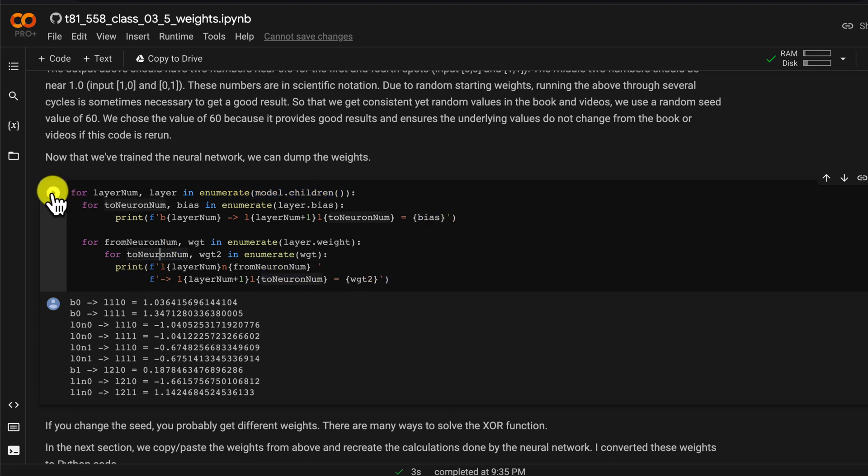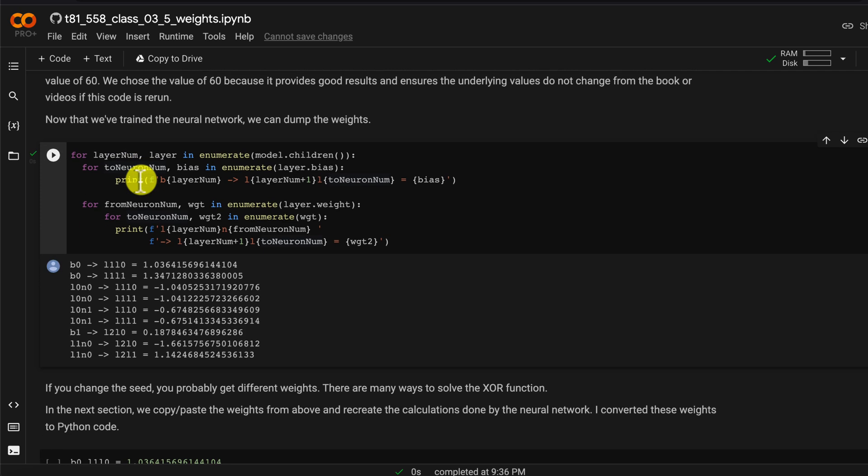You can see the output from it here, this should stay the same since it's seeded. You can see that the bias in the first layer connection to the hidden layer, the numbers here, and then you can see the individual weights.